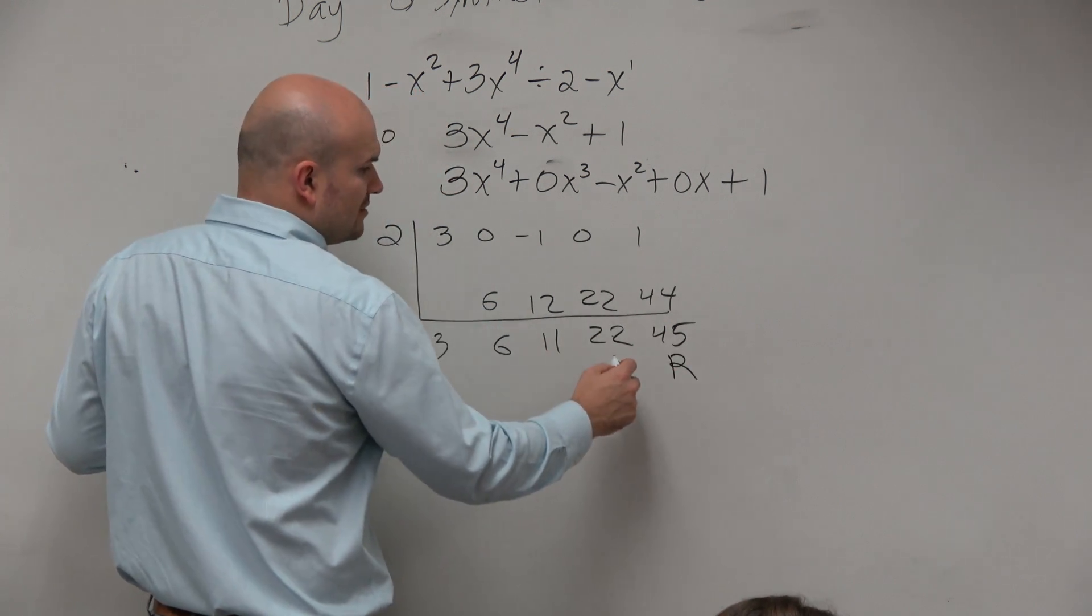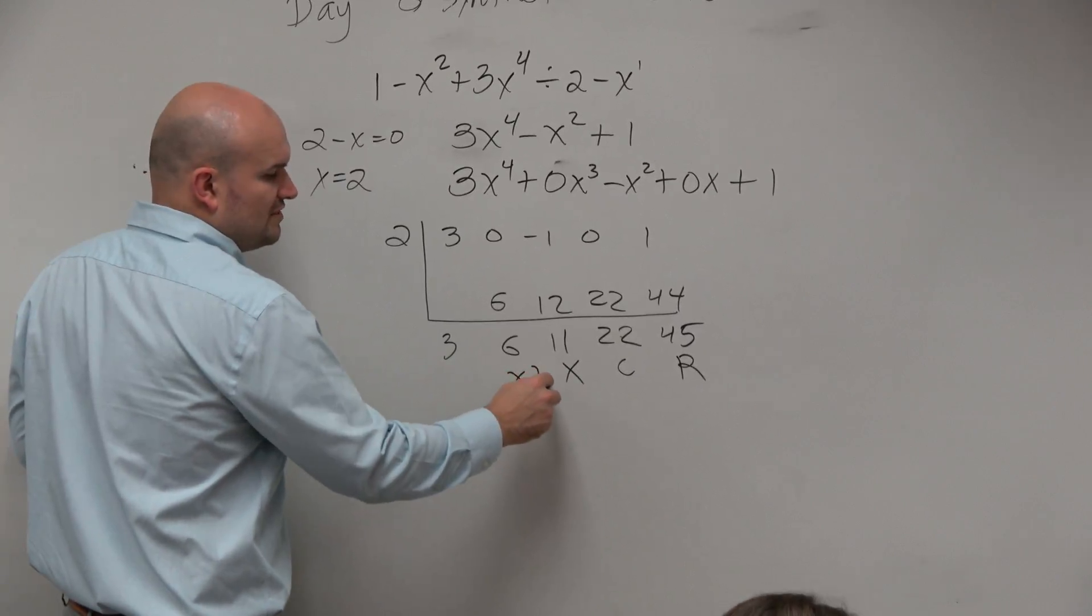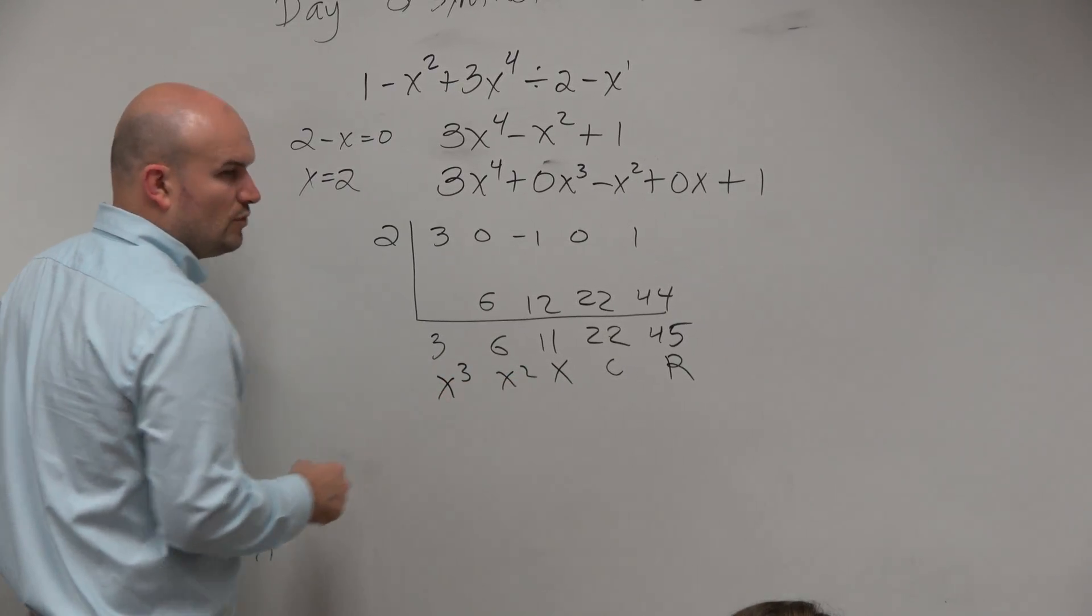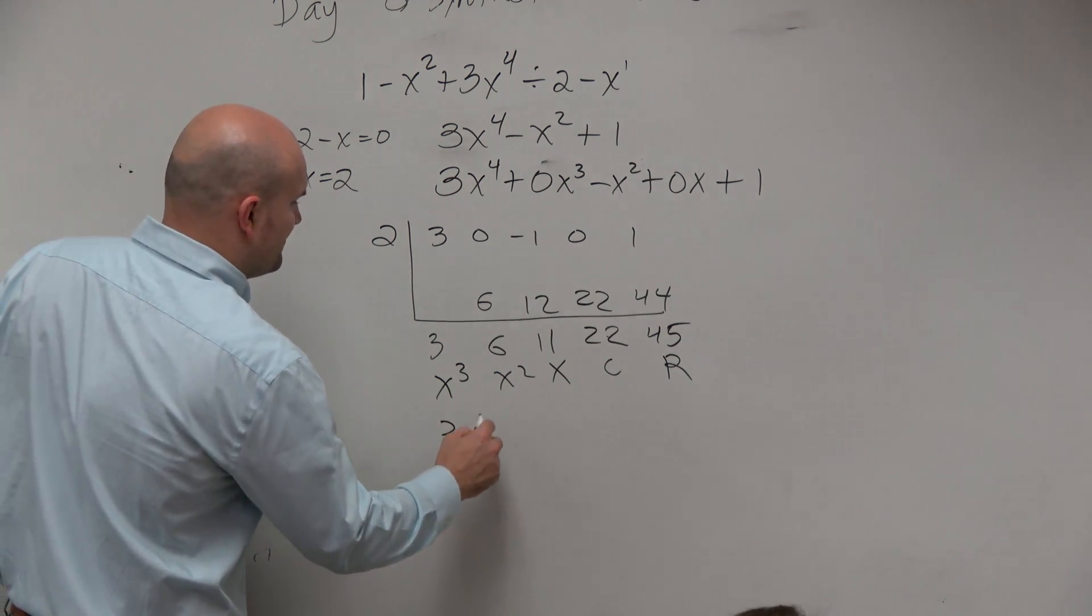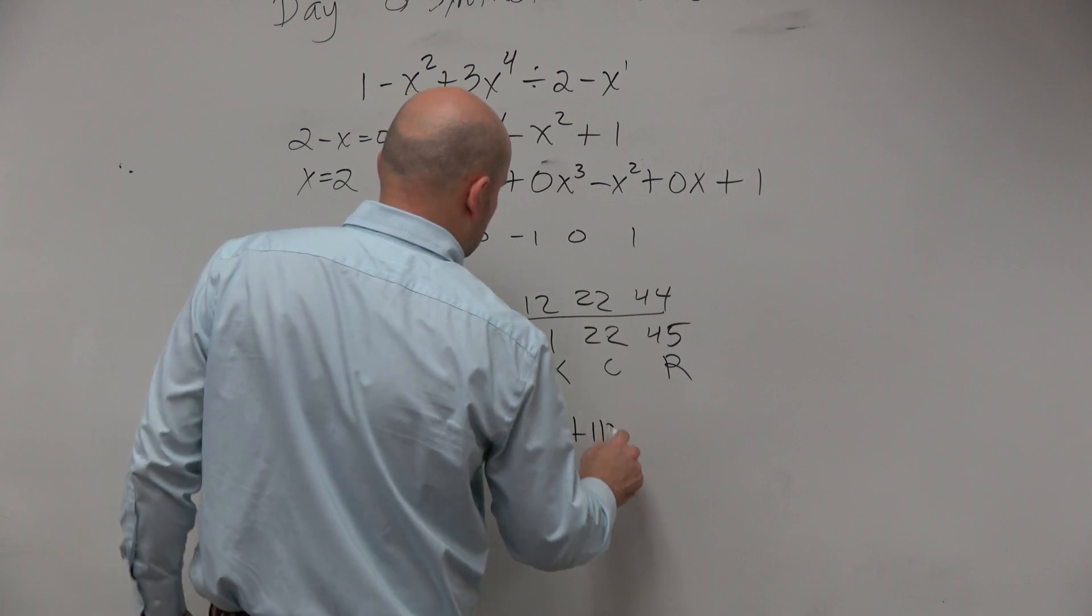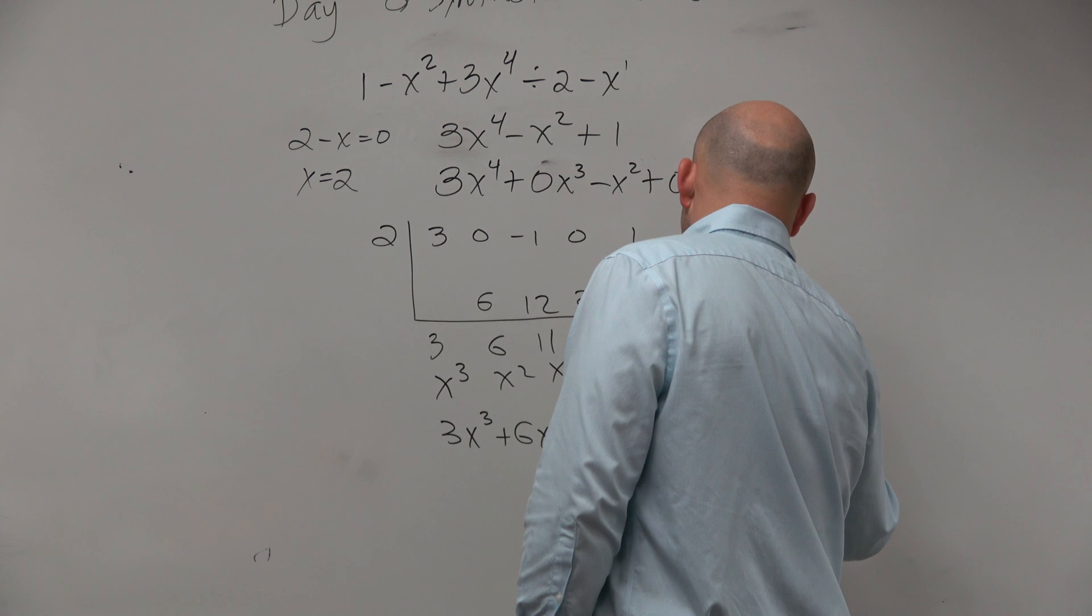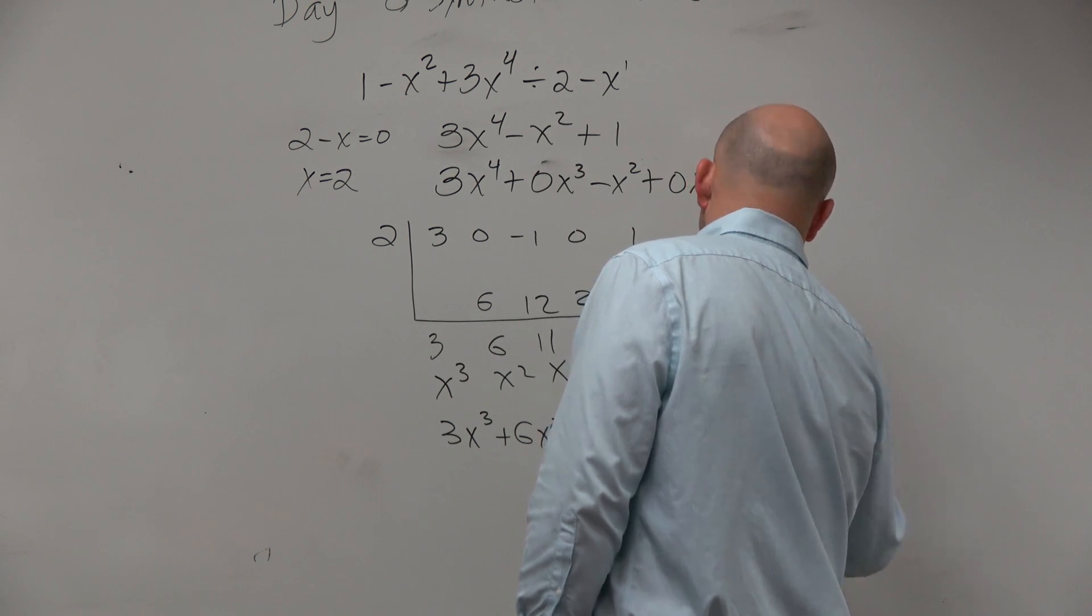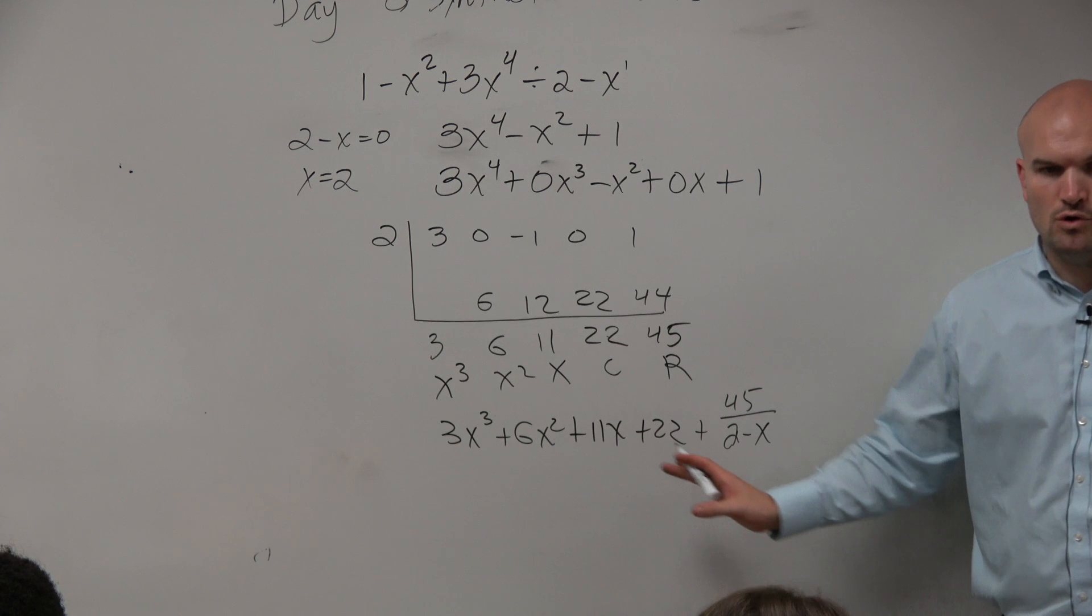Remember, the last term is our remainder, constant, coefficient of linear, coefficient of quadratic, coefficient of cubic. So to write your answer, like how we did for long division, all you do is take the remainder and then put it over your divisor. OK? So that would be our quotient.